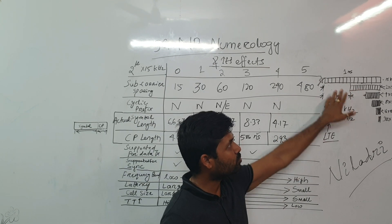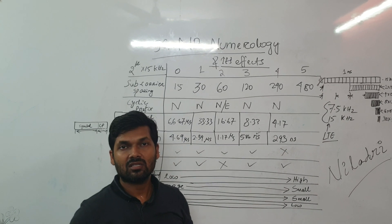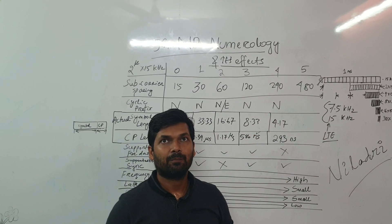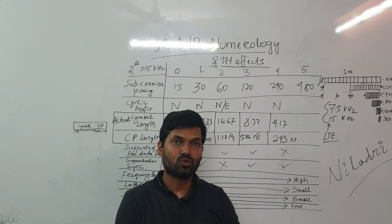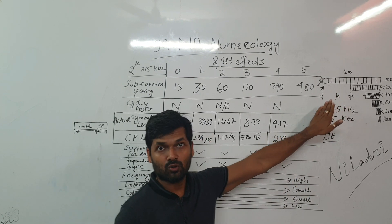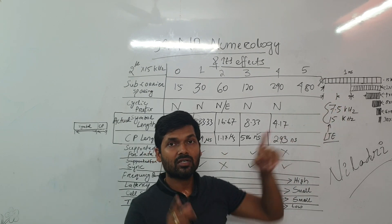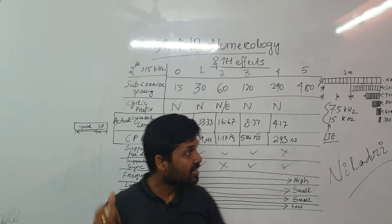So one resource block with 7 symbols and 12 subcarrier will be 84 resource elements in LTE for one resource block.